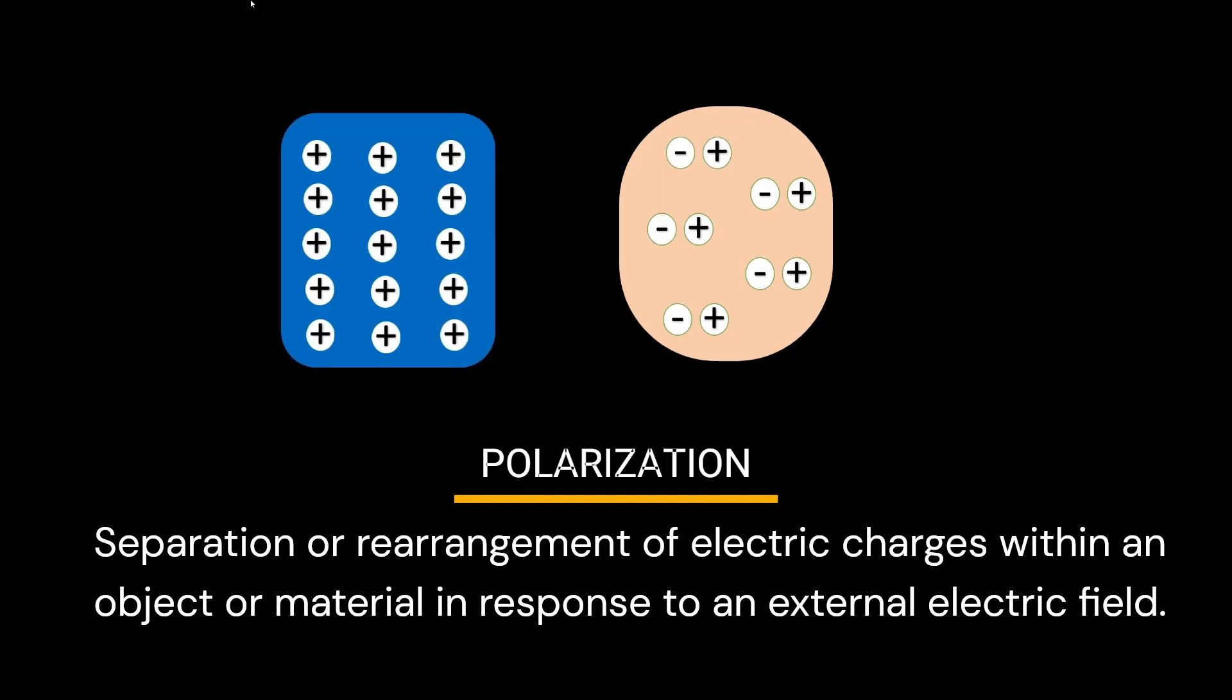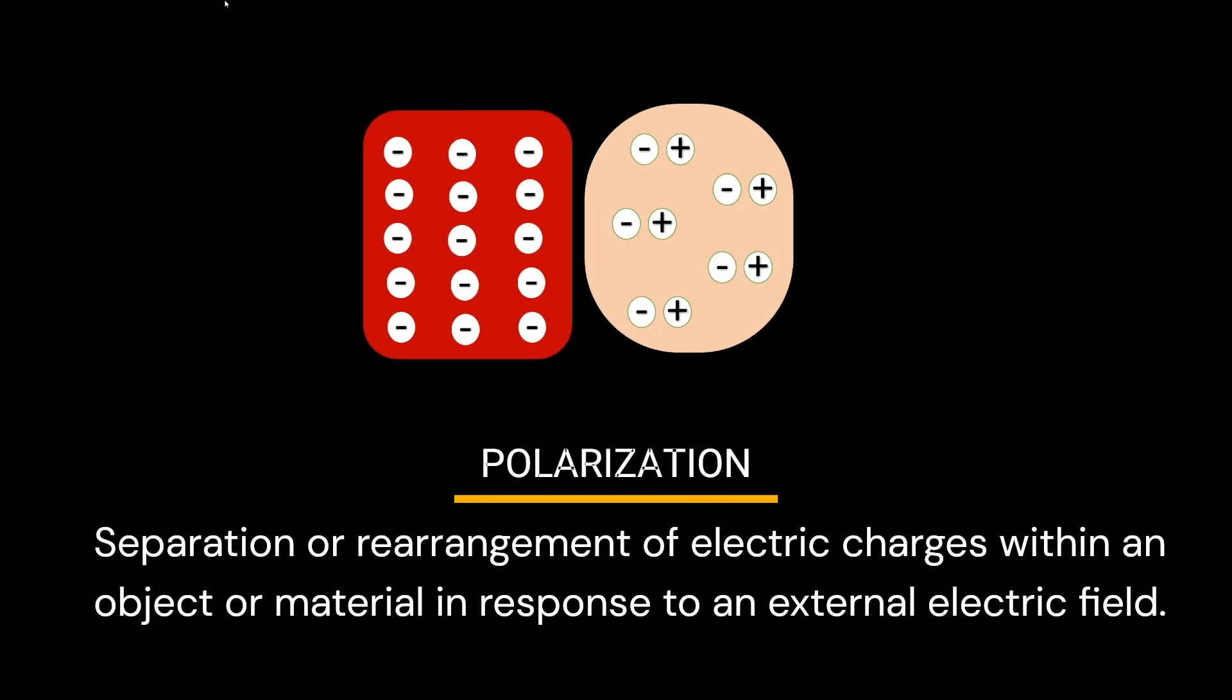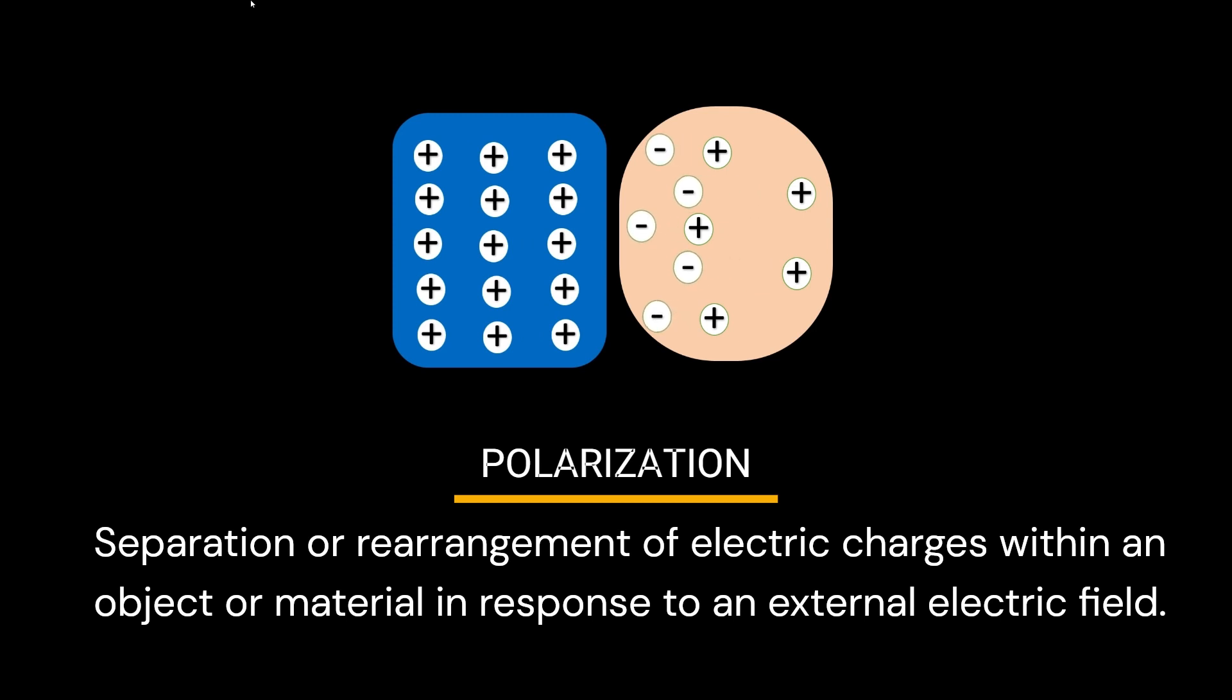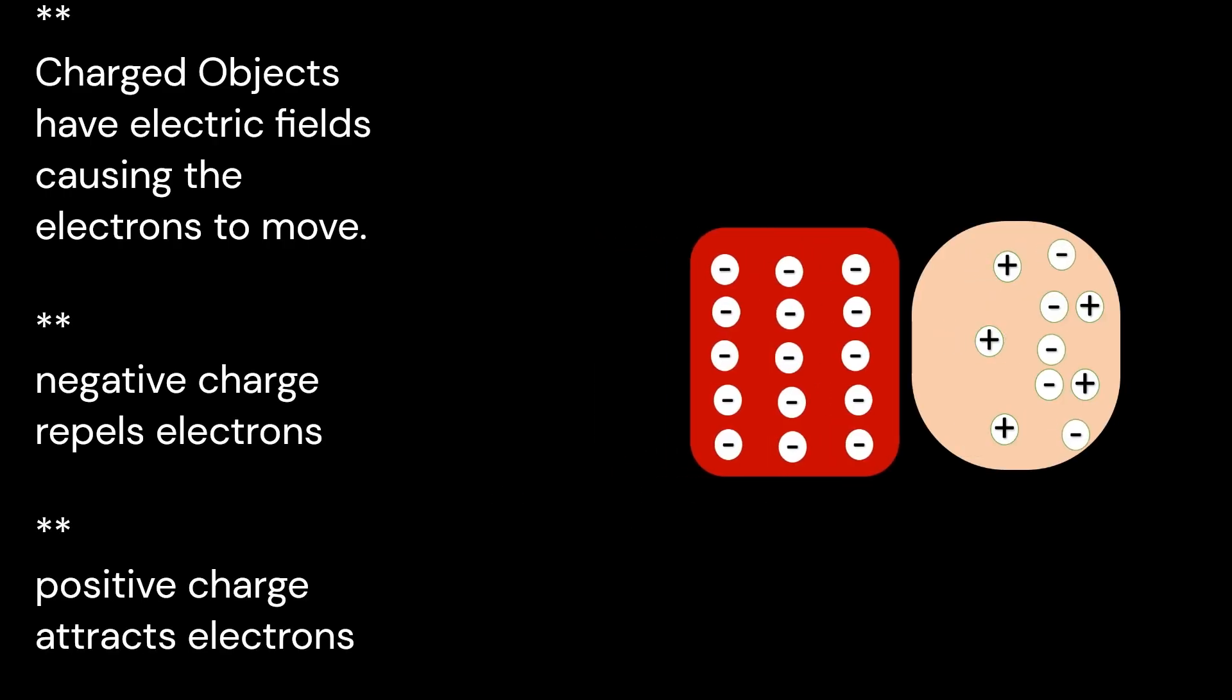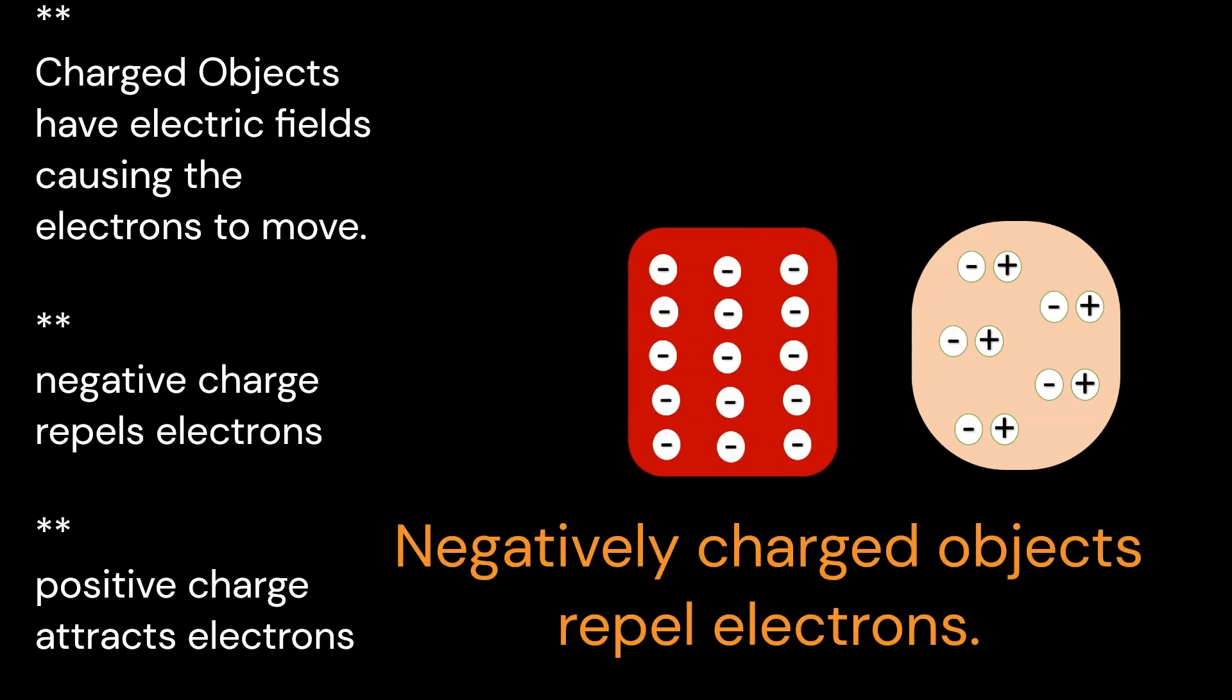Polarization can refer to the separation or rearrangement of electric charges within an object or material in response to an external electric field. When an external electric field is applied to an object, the electrons within the atoms or molecules of the material may shift, causing an uneven distribution of charges.